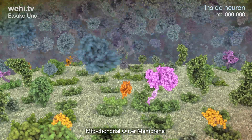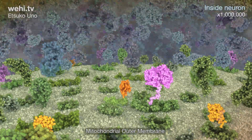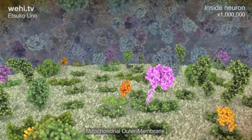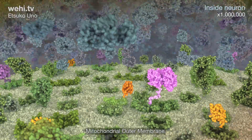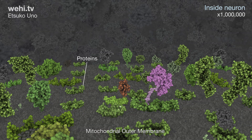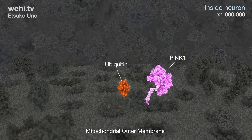Mitochondria are compartments or organelles of cells that are key to providing the cell with energy. If mitochondria become damaged or dysfunctional, proteins on the mitochondrial outer membrane become tagged with ubiquitin. Decoration of mitochondria with ubiquitin signals for the organelle's destruction so that it can be replaced.